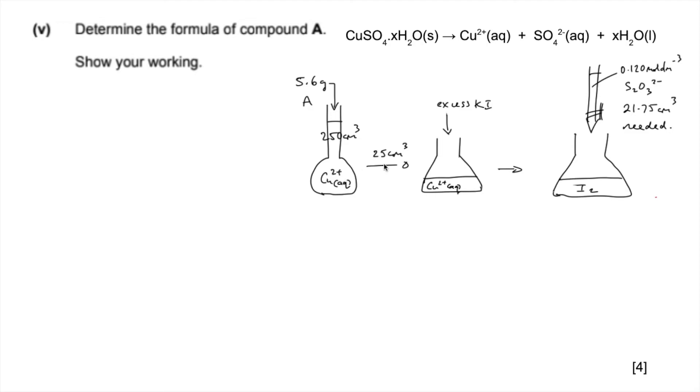25 cm³ of that is then put into the conical flask. An excess of KI is added, and the I⁻ ions are turned into iodine. The titration detects how much iodine was in the flask. Here's a reminder of the equations.